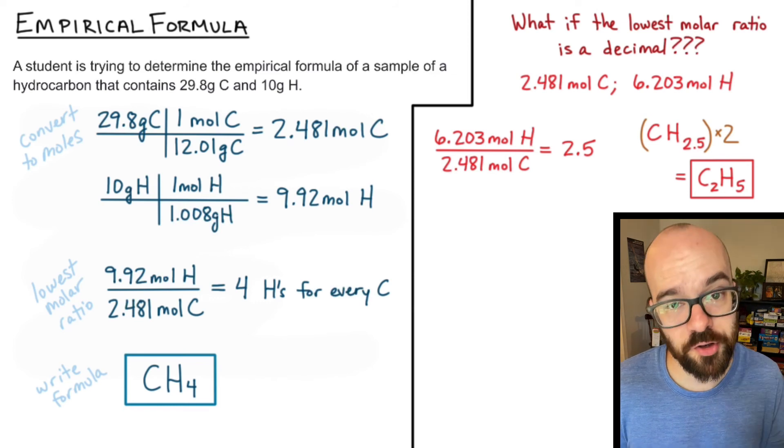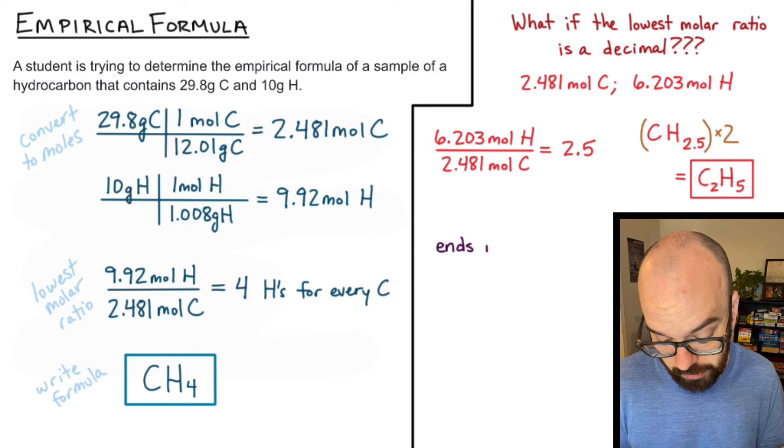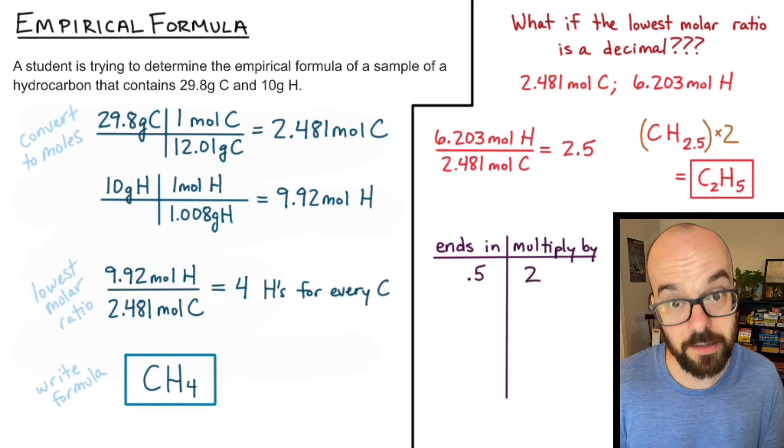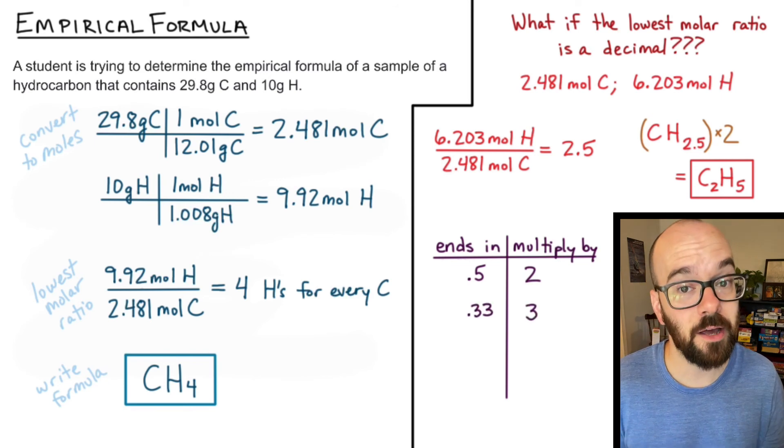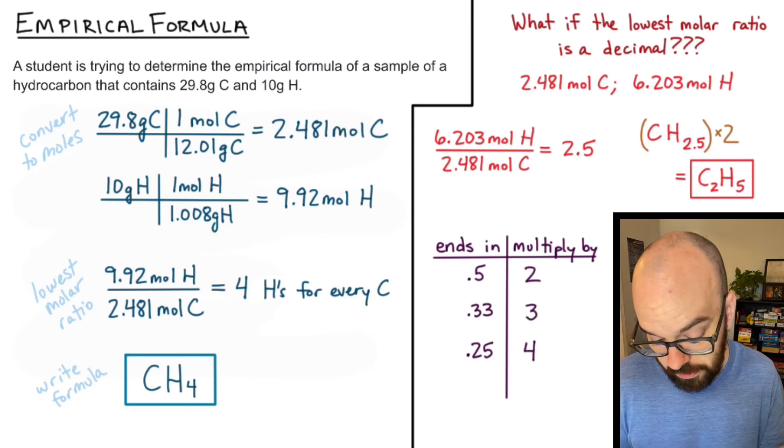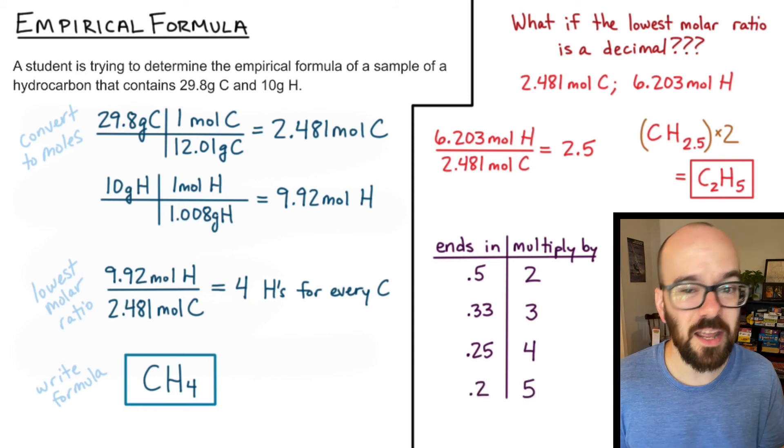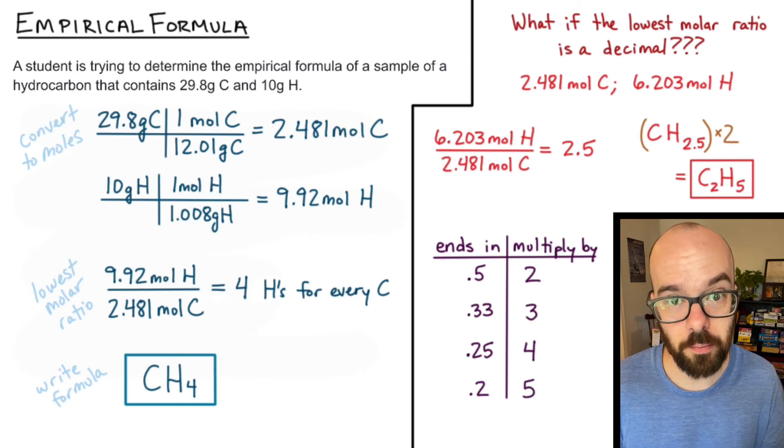So if you get a decimal you're going to have to multiply everything by a certain number. Let's take a look at some of the possibilities that you could have. If something ends in 0.5 you're always going to multiply it by 2 to get a whole number. If your ratio ends in 0.33 you'll multiply by 3 which will give you a whole number. If it ends in 0.25 multiply by 4. If it ends in 0.2 multiply by 5. And if it ends in something else you'll just have to figure out what can you multiply it by to get a whole number.